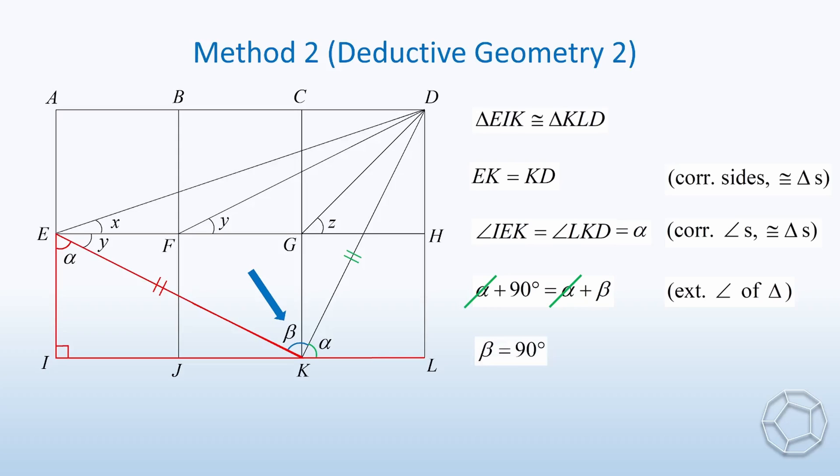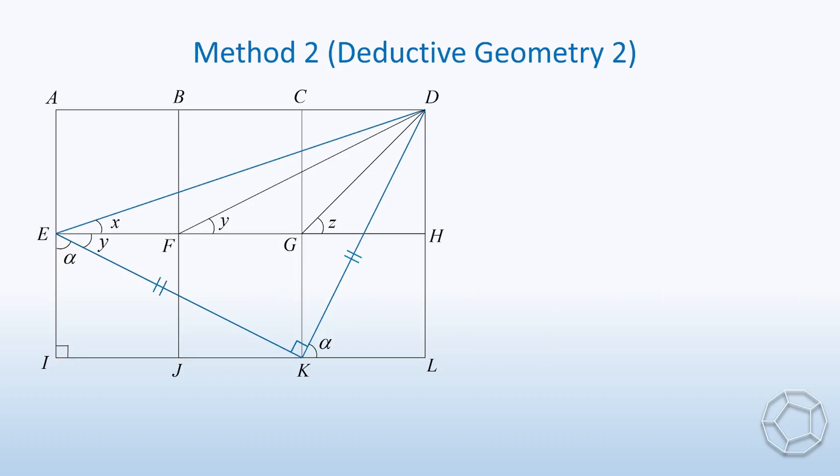What can we say about x and y? Putting the results together, we have proved that the blue triangle DEK is a right-angled isosceles triangle. Therefore, the remaining two angles are both 45 degrees. That is, x plus y is equal to 45 degrees. We get the same result as in method 1. Can we make use of the same figure but come up with a different proof? Absolutely.